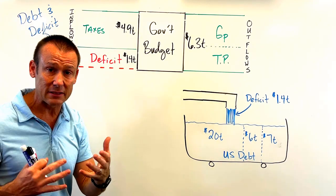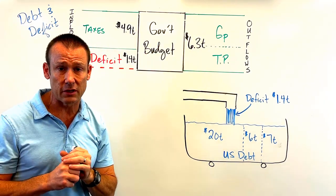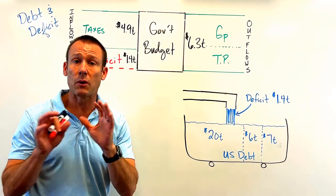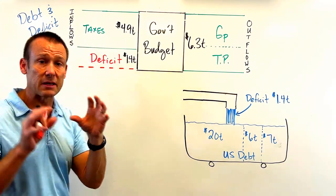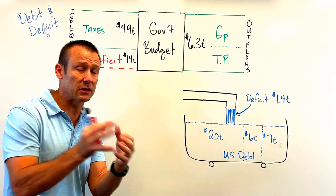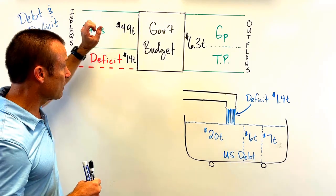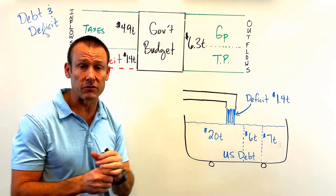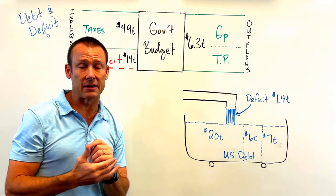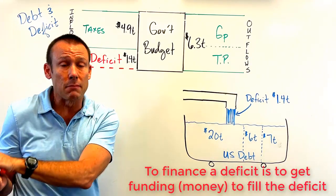We can change the amount of tax revenues by passing new legislation, or change government purchases or transfer payments — all through legislation. But focus on this: the deficit is a present thing. We've already passed the budget, we're running a deficit, our tax revenues are not enough for our obligations, so the Treasury Department has to finance that deficit — meaning get funding, get money.